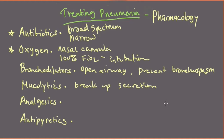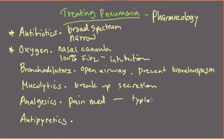Analgesics — pain medications — are also used because pneumonia can be painful. This is often forgotten in the focus on oxygenation, ventilation, and antibiotic treatment. We often forget that pneumonia can be a very painful condition. We talked about that pleuritic chest pain in the first video. This can range from Tylenol to opioids depending on the patient.